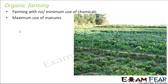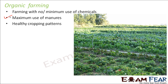Organic farming involves maximum use of manures. Manures and fertilizers do the same thing, but fertilizers being strong chemicals are a little more effective than manures. Healthy cropping patterns are also followed — for example, in one season one crop is grown and in another season a different crop is grown so they complement each other, following proper crop patterns to increase productivity.